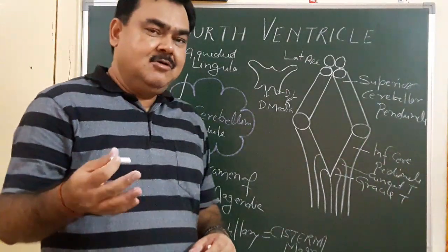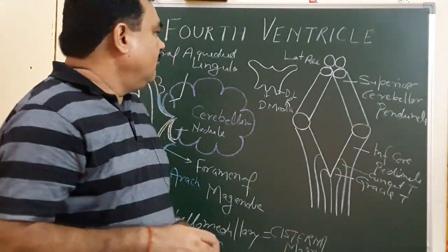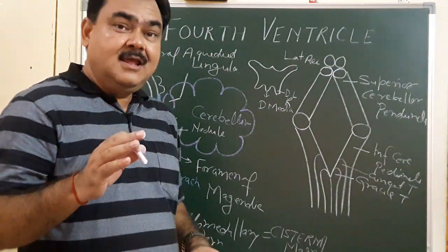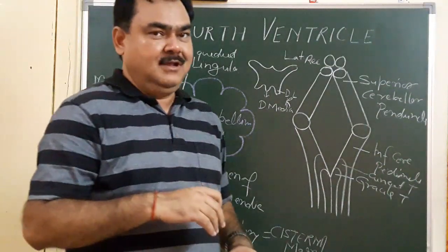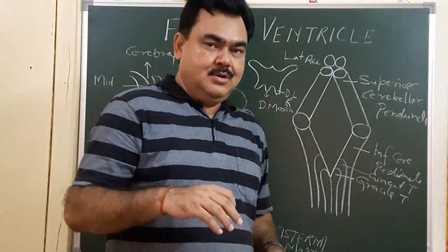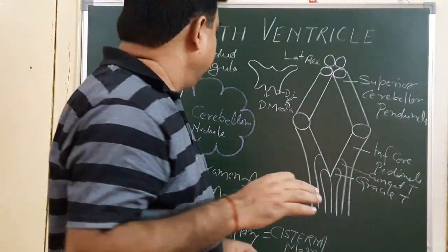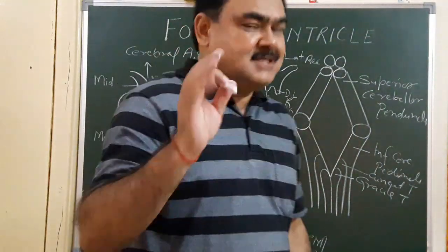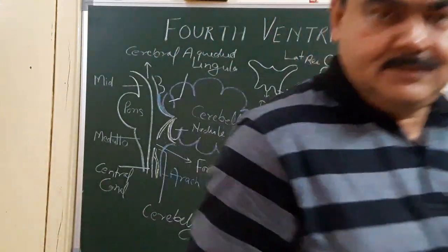In this part you have seen the angles, lateral walls, and recesses of the fourth ventricle. In the second part, we will discuss the floor and roof of the fourth ventricle. Thank you.